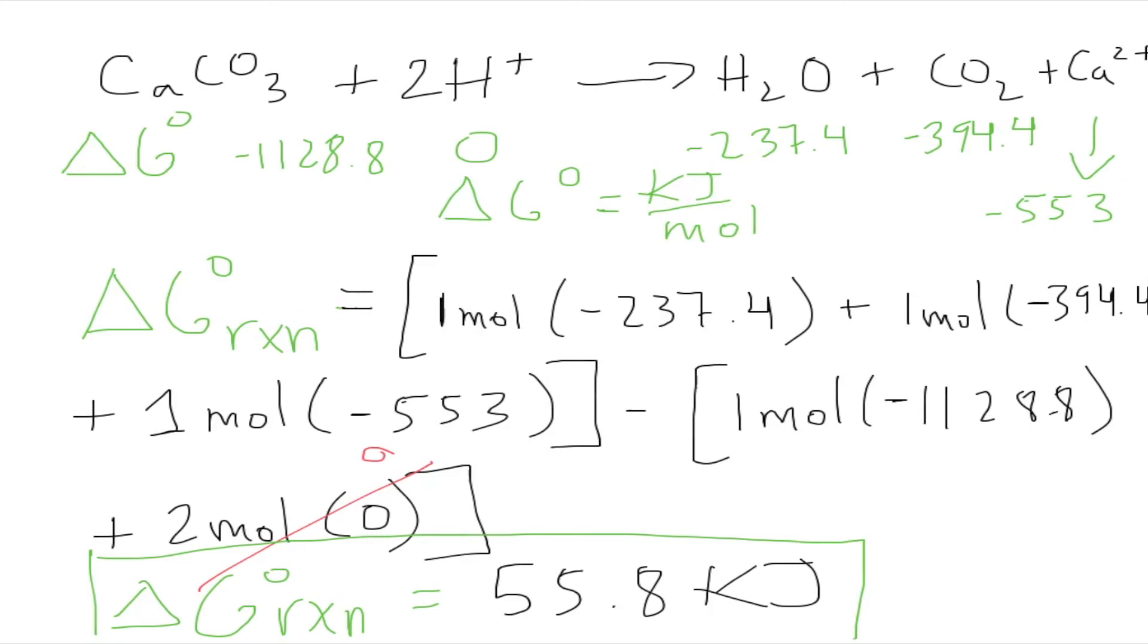That'll be the answer. So basically, what I wanted to show with this video is that there's more than one method to obtain the Gibbs free energy for the reaction or the system. This one involved the case in which you only have the Gibbs free energy for the reactants and products, and you didn't have anything with enthalpy and entropy.